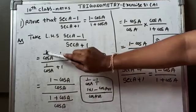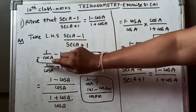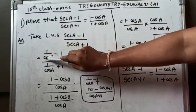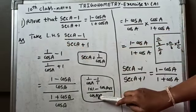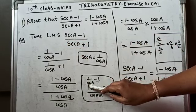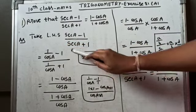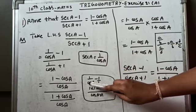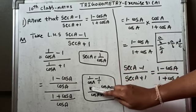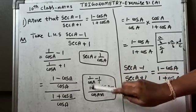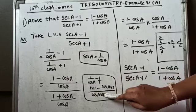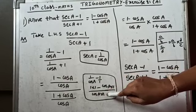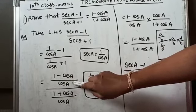Now in the numerator we have (1/cos A) - 1. We need to take the LCM. Since 1 = 1/1, the LCM is cos A. So the numerator becomes (1 - cos A) / cos A.